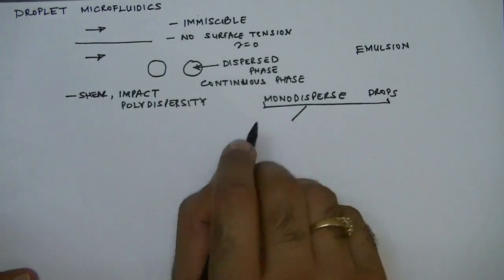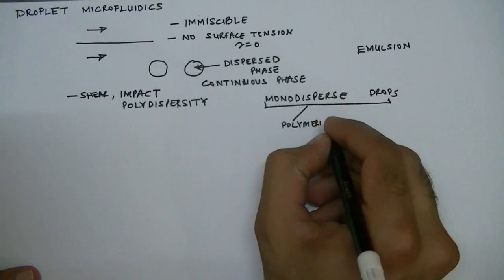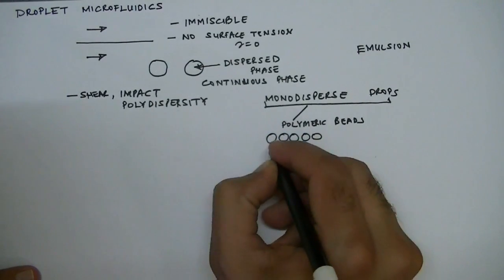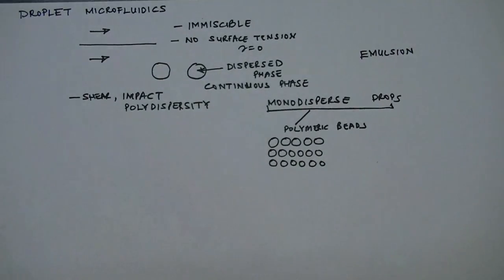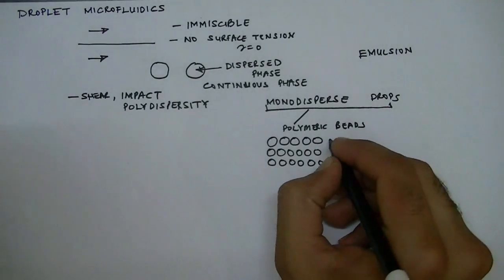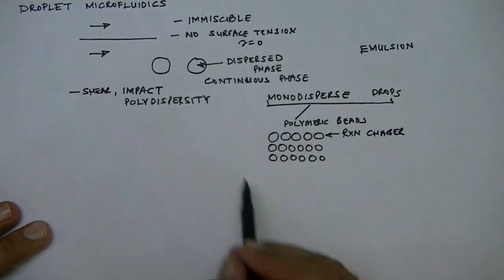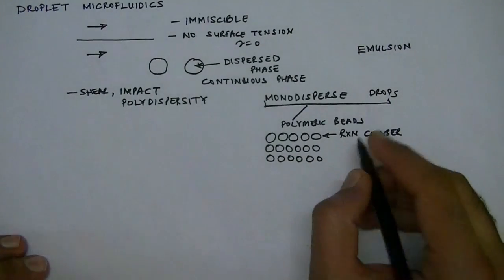Once you have monodisperse drops, you can use a microfluidic device to do different things. For example, you can polymerize these drops to make polymeric beads. You can generate a large number of drops of equal sizes and, if you control the chemical composition of species inside each drop, you can use each drop as a reaction chamber. So you can think of doing an experiment in a few test tubes, but if you do this in a droplet you can do millions of experiments in parallel — massively parallel reactions.